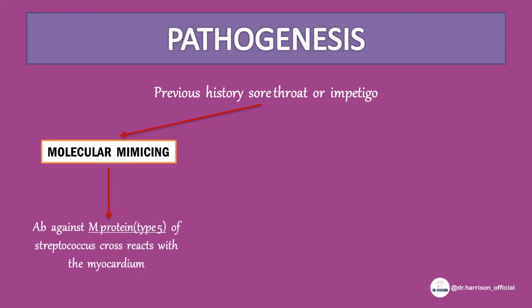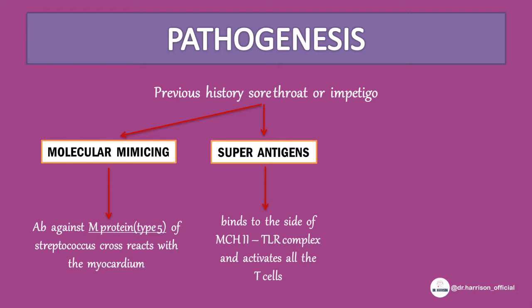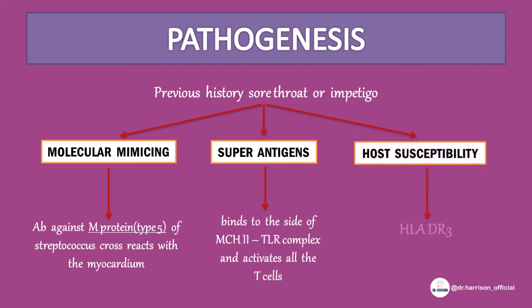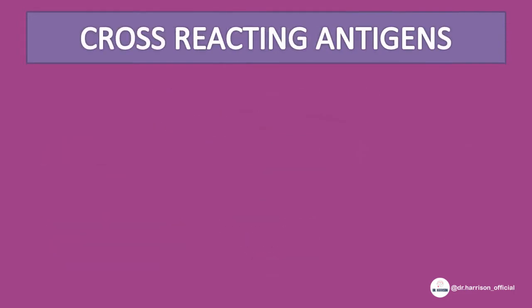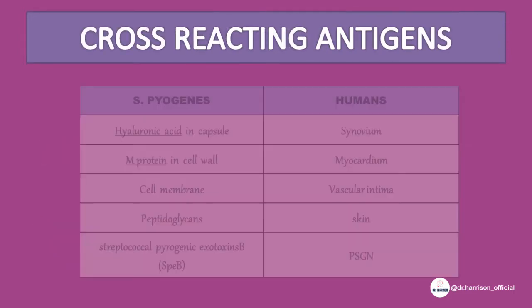Firstly, antibodies produced against the M protein of streptococcus cross-react with the myocardium and valves — this is called molecular mimicry. Secondly, superantigens are glycoproteins produced by the organism that bind to the MHC2-TLR complex and activate all T-cells. Thirdly, host susceptibility is an important factor determining why RHD develops in only 3% of people with streptococcal sore throat. HLA-DR3 increases susceptibility.